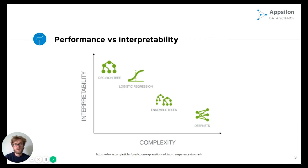In the ML world, we may observe the following trend in terms of complexity, accuracy, and interpretability. Typically, the more complex a model is, the more accurate it is, but also much harder to interpret. The goal of my master's thesis was to find out whether it's possible to extract some properties of complex machine learning models and try to use them to train simpler ones.